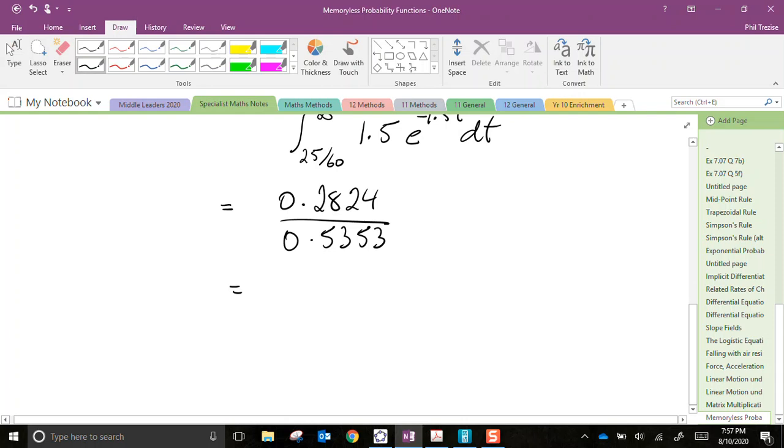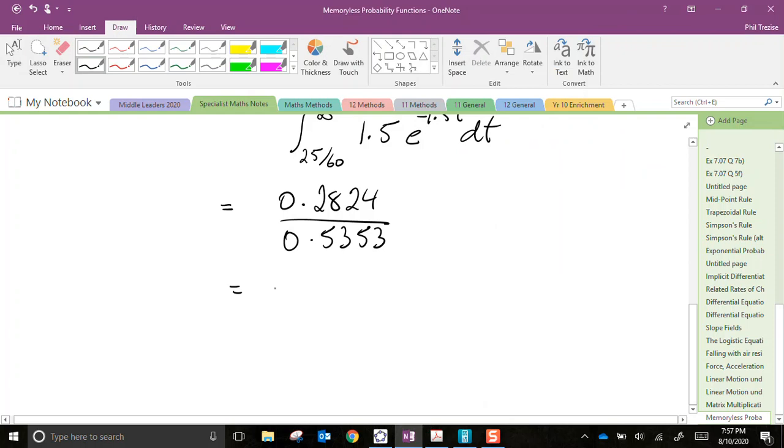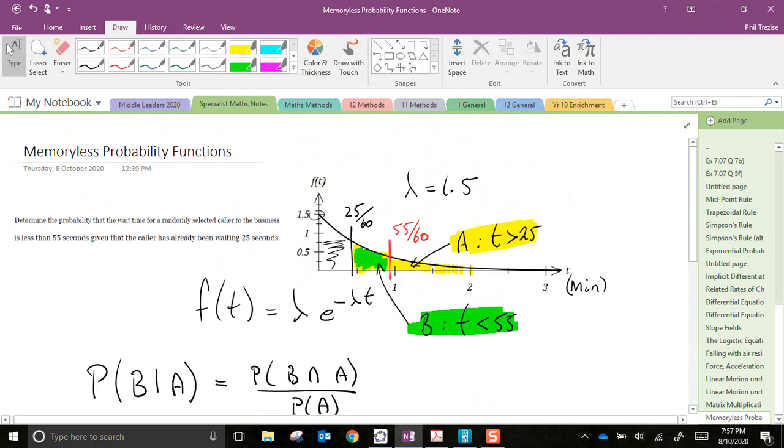And then the answer is literally going to be the number I have stored in A divided by the number in B: 0.5276. That's my probability that the caller will be answered in less than 55 seconds, if we already know they've been on hold for 25 seconds. A conditional probability question combined with an exponential function.